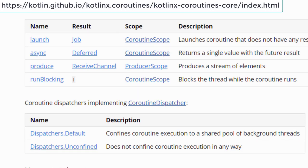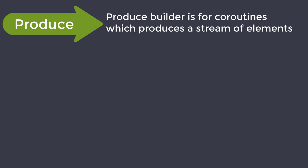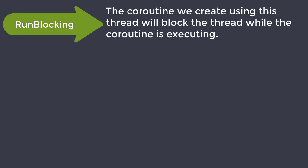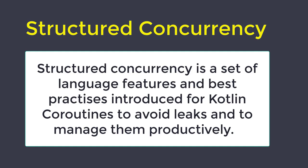In Android development, Launch and Async Builders are the ones we use most of the time. We also have Produce and RunBlocking Builders. Produce Builder is for coroutines which produce a stream of elements and returns an instance of ReceiveChannel. We use RunBlocking mostly for testing — unlike other coroutines, the coroutine created using this Builder will block the thread until its execution is over. Structured Concurrency is a set of language features and best practices introduced for Kotlin Coroutines to avoid coroutine leaks and to manage coroutines productively.